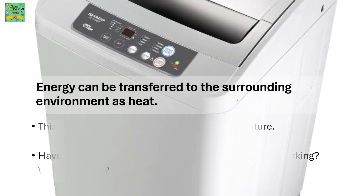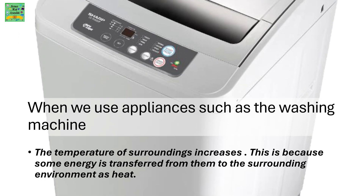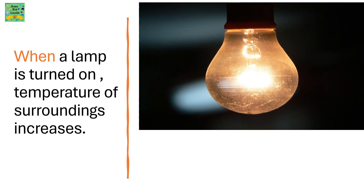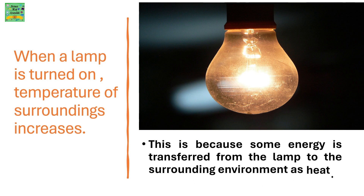Energy can be transferred to the surrounding environment as heat. This can be observed as an increase in temperature. Have you stood beside a washing machine while it's working? Why is it warm? When we use appliances such as a washing machine, the temperature of the surroundings increases, because some energy is transferred from them to the surroundings as heat. When a lamp is turned on, the temperature of the surrounding also increases, because some energy is transferred from the lamp to the surrounding environment as heat.